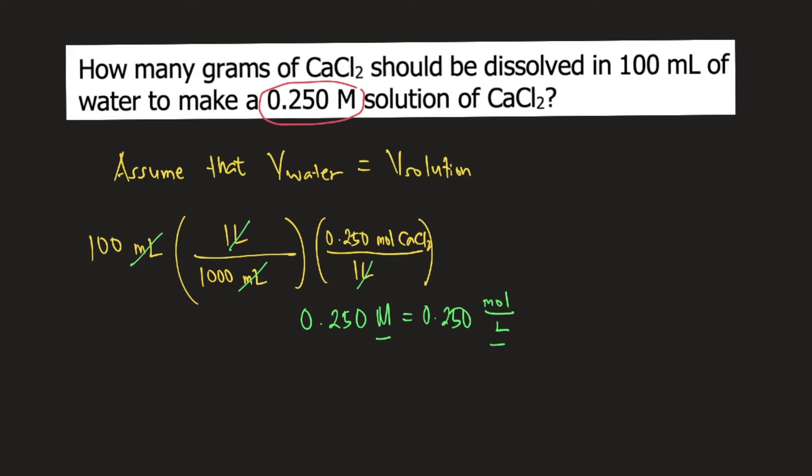And finally, you can solve for the mass of calcium chloride by plugging in the molar mass. We know that the molar mass of calcium chloride is equal to 110.98 grams per mole.